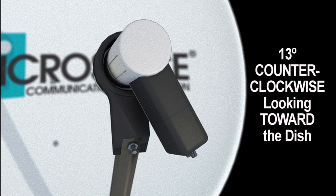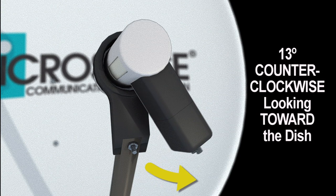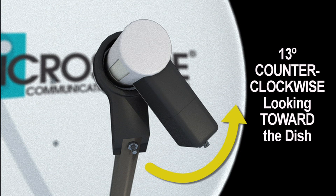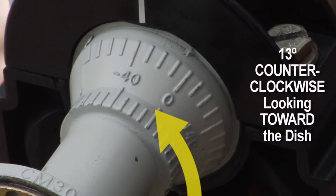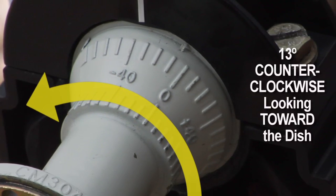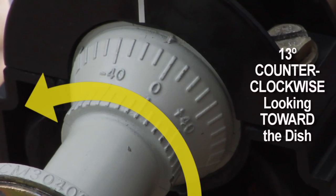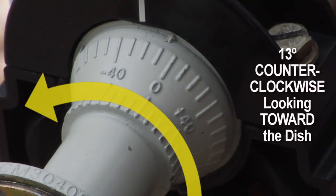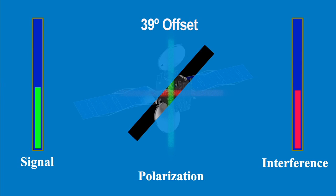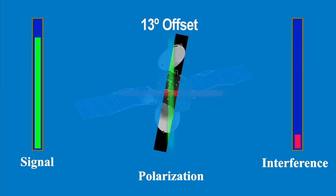It is very important to rotate counter-clockwise as you look toward the dish. If you turn the feed horn in the wrong direction, you won't see much difference in signal now, but when the new satellite goes online, there will be a loss of signal strength or even a total loss of service. That's because if you rotate the polarization in the wrong direction, it will be off by 39 degrees instead of 13 degrees.